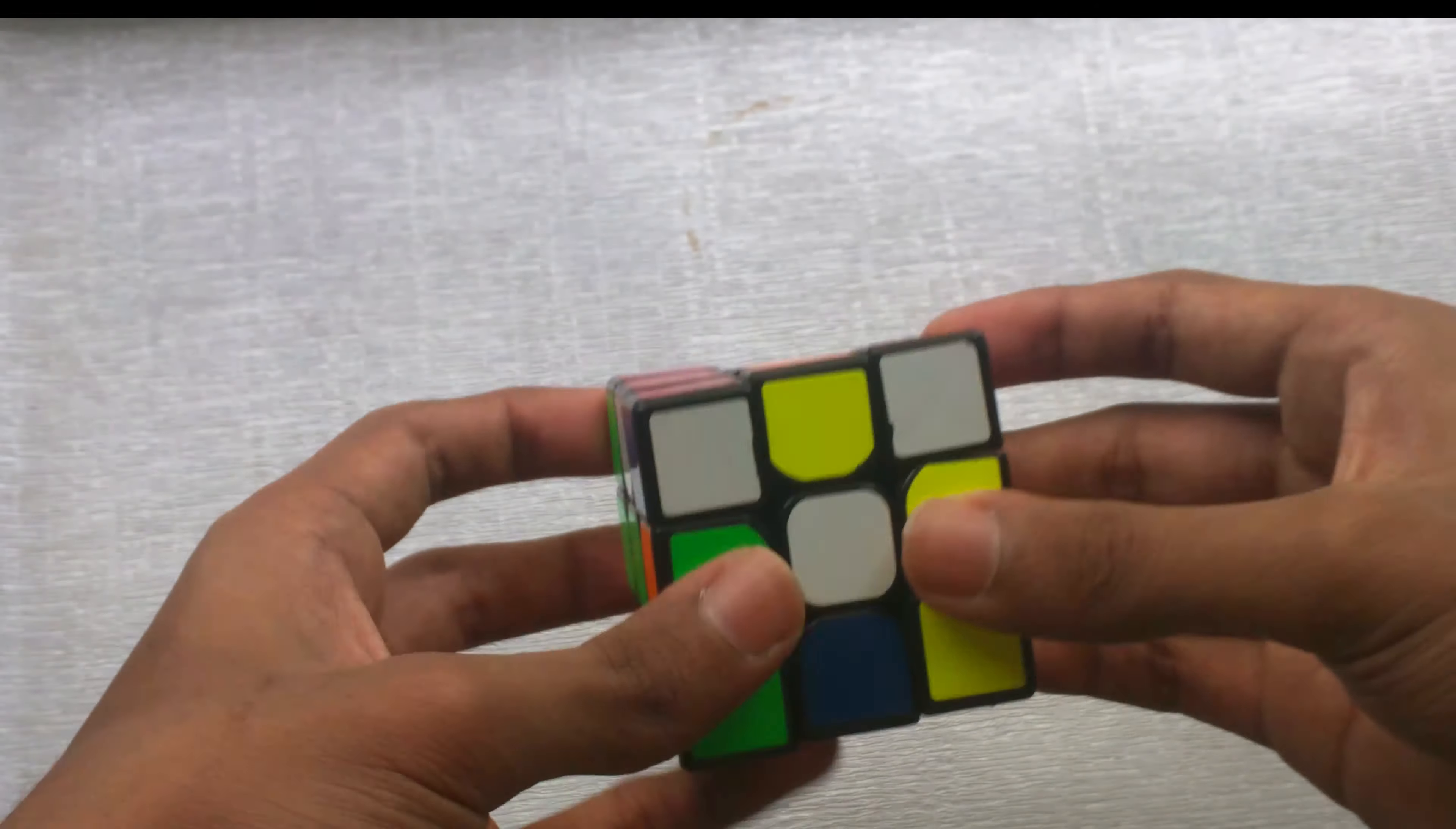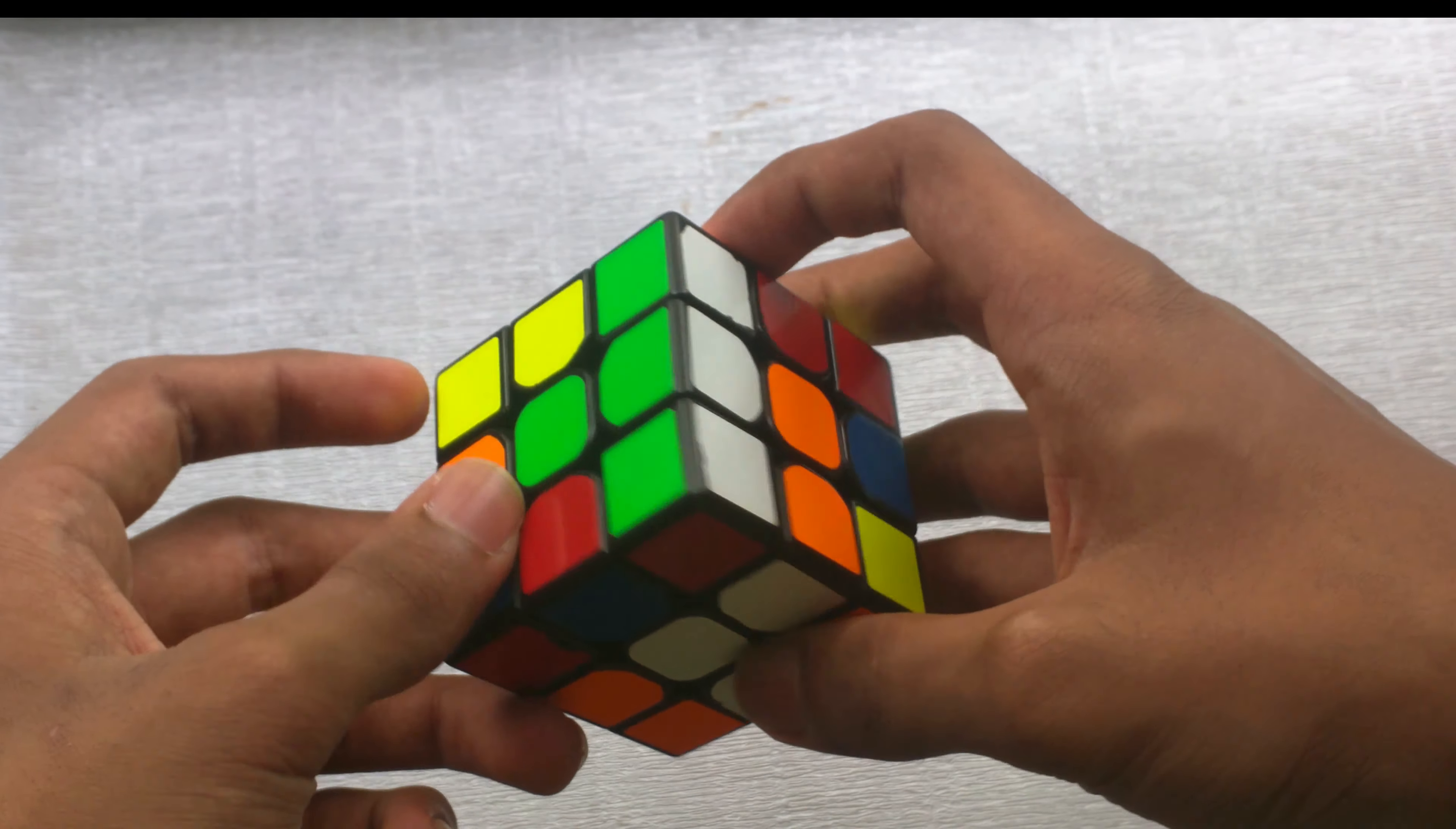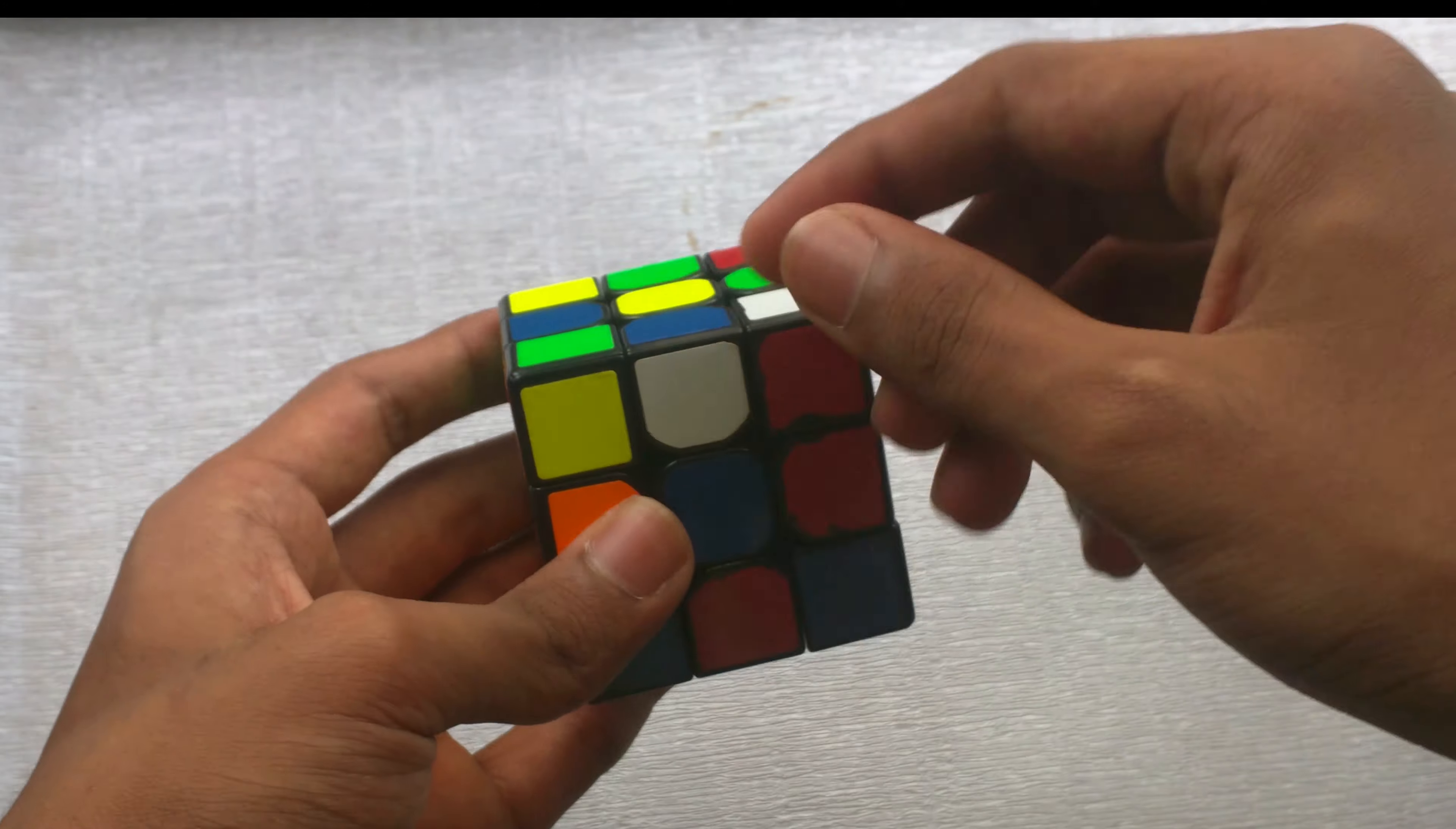But in the CFOP method, you wouldn't do any of that and you would just do it directly on the bottom. So you have to align one piece, okay? Then you can just put the other pieces as you wish. So here, if the piece is like this where the colors are not matching, then push to the left.